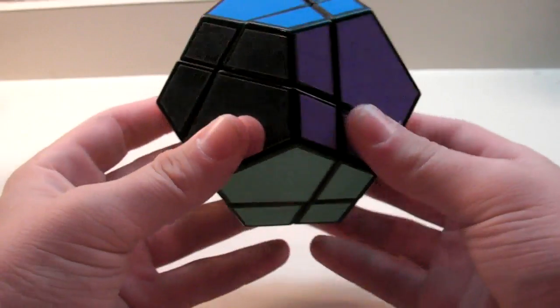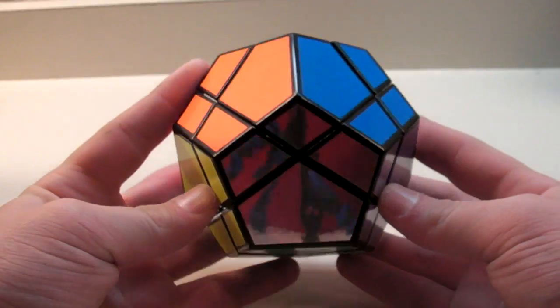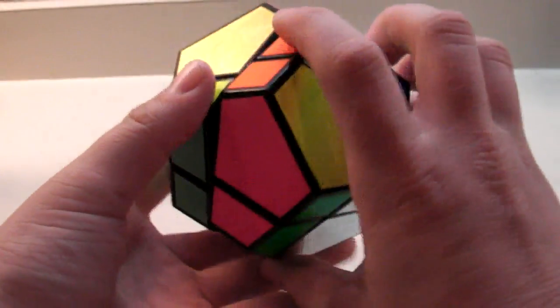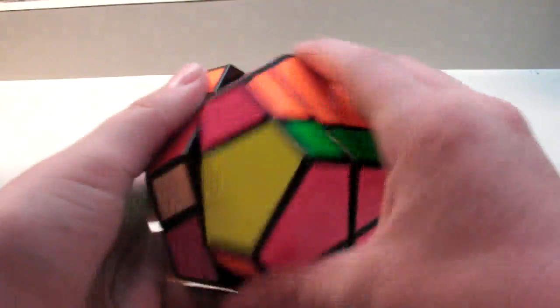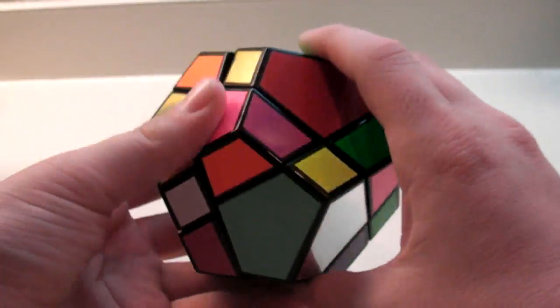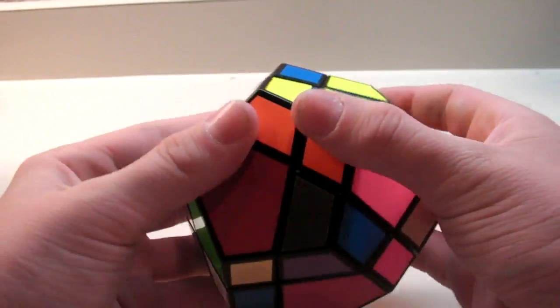So now that I've gone over the notation, general method, and my variation of Skewb Ultimate other than yours, I would like to proceed directly into the tutorial. So while I'm scrambling it, you will hear that there is a clicking or ball bearing mechanism in this, as there are on many Mefferts puzzles, including the Pyraminx, Skewb, and Polymorphix.